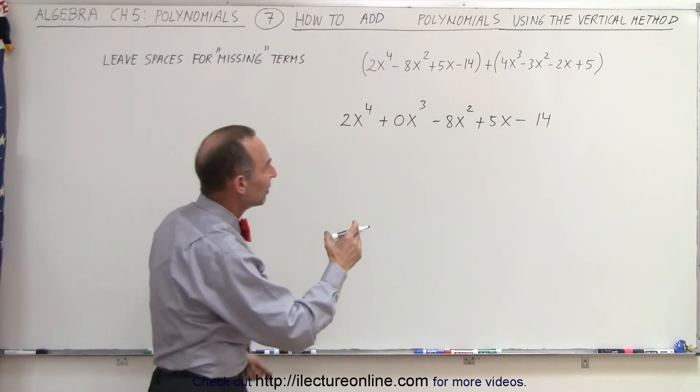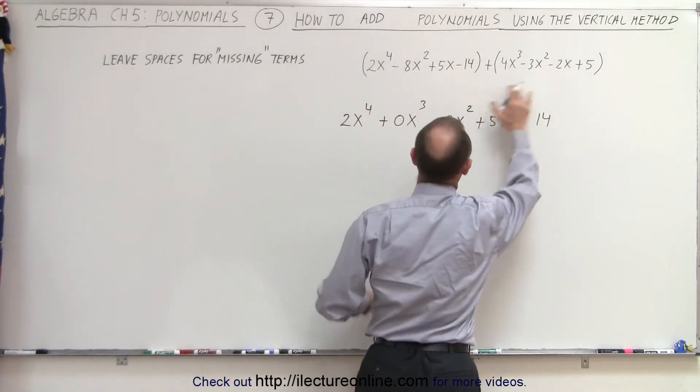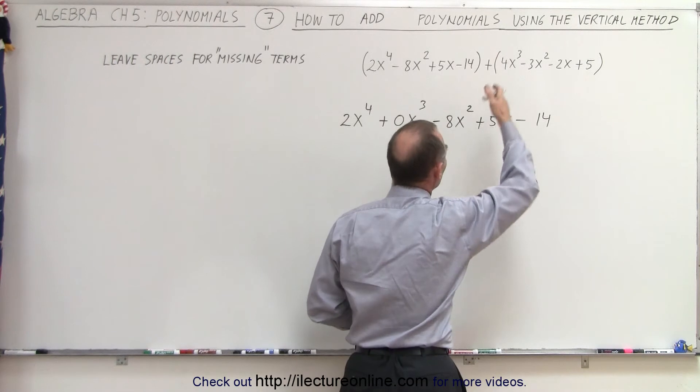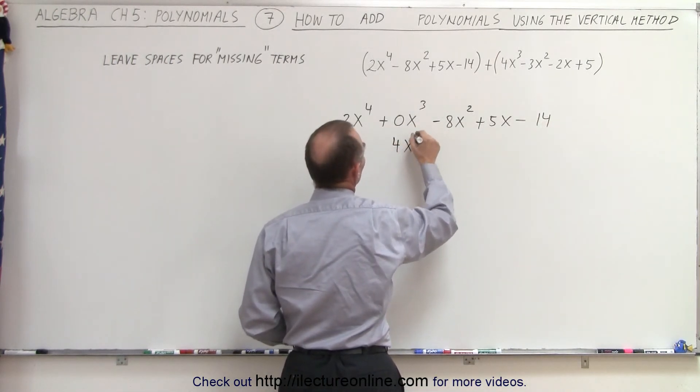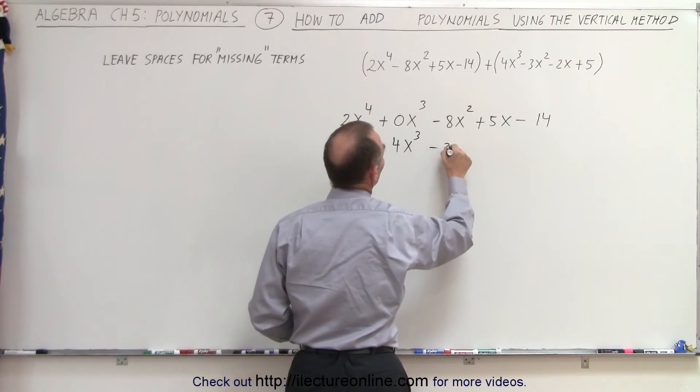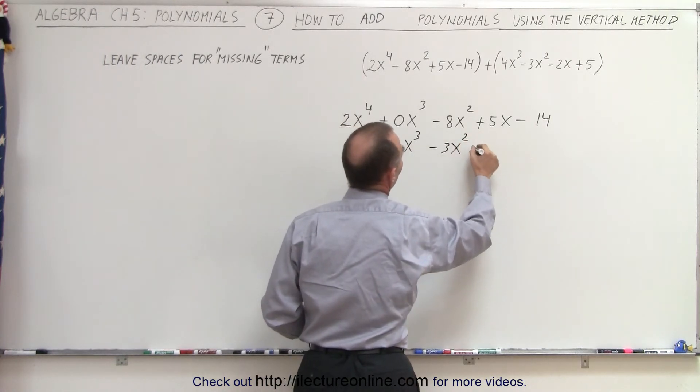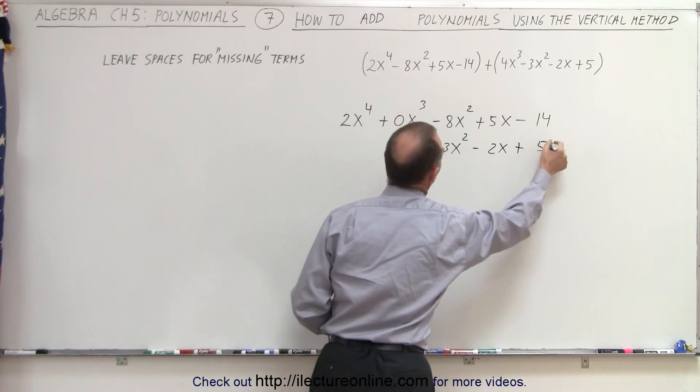Now, we put the second polynomial below it, and we line up the same order terms. So, we have 4x cubed, we have minus 3x squared, minus 2x, and plus 5.